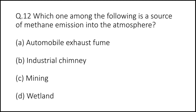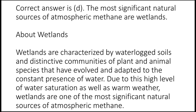Question 12: Which one among the following is the source of methane emission in the atmosphere? Options are A: automobile exhaust fumes, B: industrial chimney, C: mining, or D: wetland. The correct answer is D. The most significant natural sources of atmospheric methane are wetlands. Wetlands are characterized by waterlogged soils and distinctive communities of plant and animal species adapted to the constant presence of water. Due to this high level of water saturation as well as warm weather, wetlands are one of the most significant natural sources of atmospheric methane.